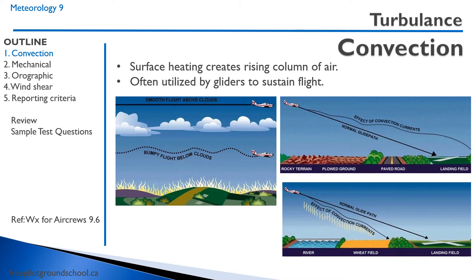If you're flying above the clouds where the lapse rate has changed, you end up with smooth flight. Looking at the right side of the diagram, a normal glide path — let's say three degrees — as we fly over cloud ground or paved roads, convective currents cause us to overshoot our normal glide path. Conversely, over cooler areas such as a river or a wheat field, we end up undershooting the glide path.